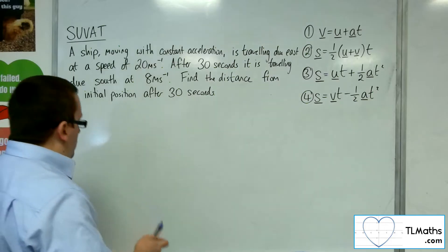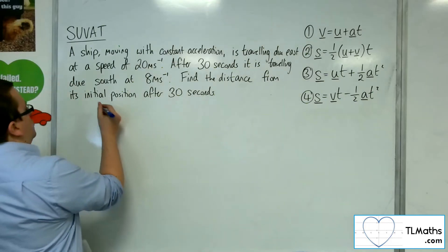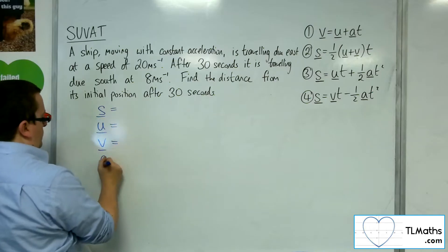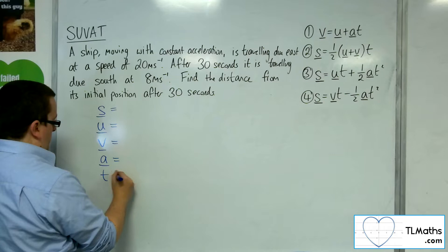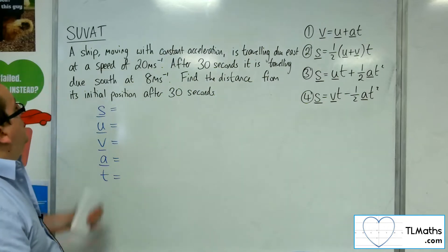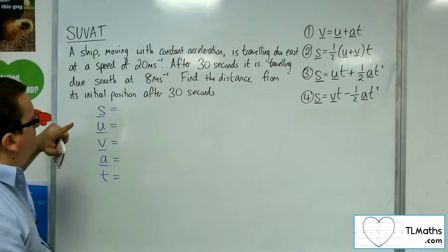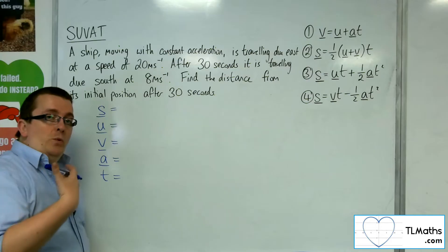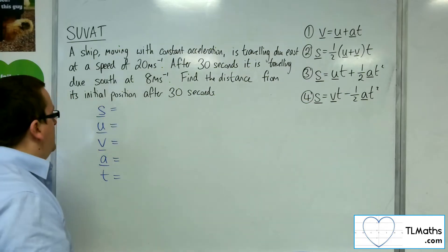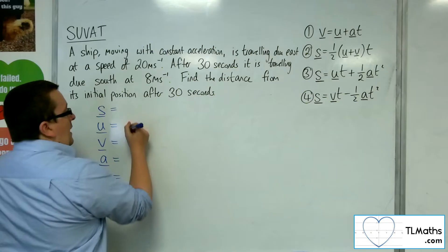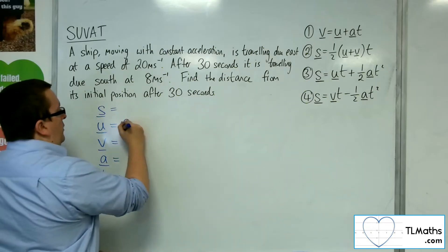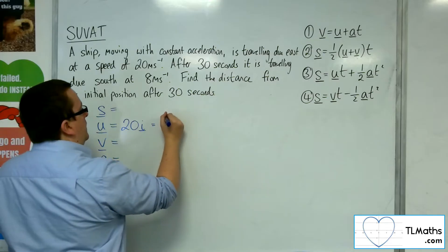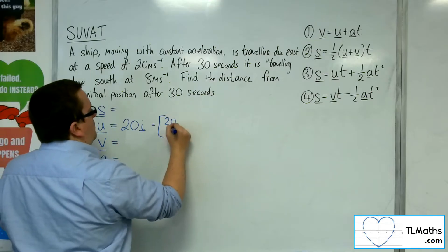So we're going straight in with SUVAT. The speed initially is 20 meters per second going due east. We can represent that as a vector in component form as 20i, or you could represent that as (20, 0).